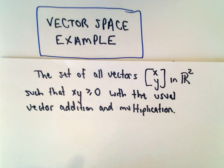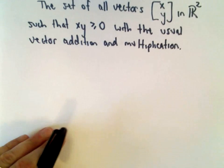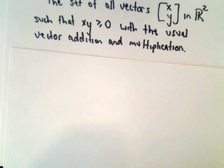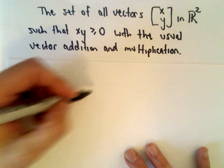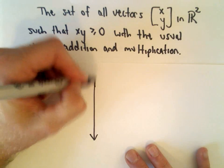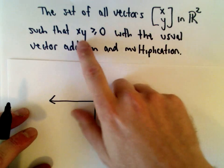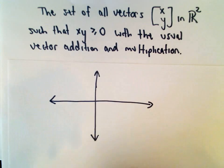And the short answer for this one is going to be no. This will not form a vector space. So if you think about R², first off, the type of vectors that we're using, and I'm just going to make a counterexample. You can prove it a little more generically, but if x times y is greater than or equal to 0...